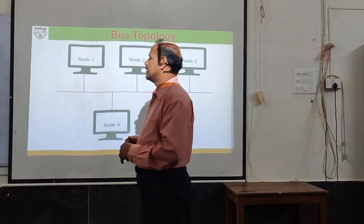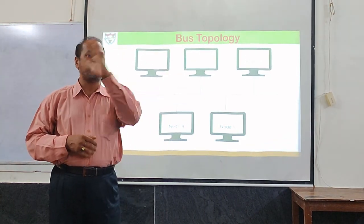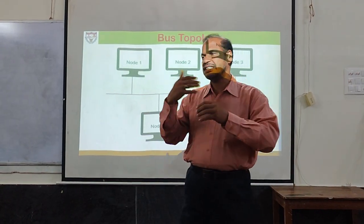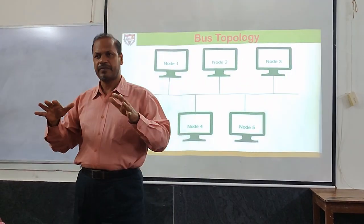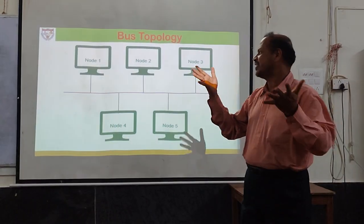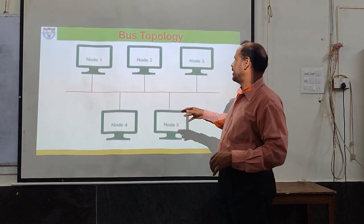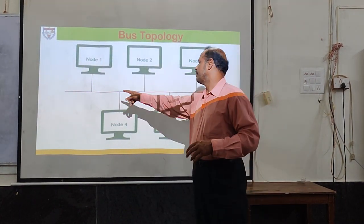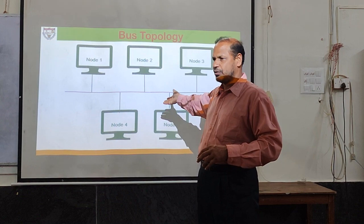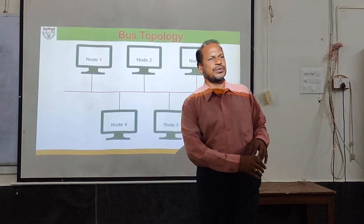Consider a bus — like a vehicle moving from one point to another, stopping at different points where some passengers get down and some get up. The bus network topology works similarly. There are various nodes connected to a long backbone cable. Any node can send information to any other node — the sender sends the information, and the intended receiver receives it.